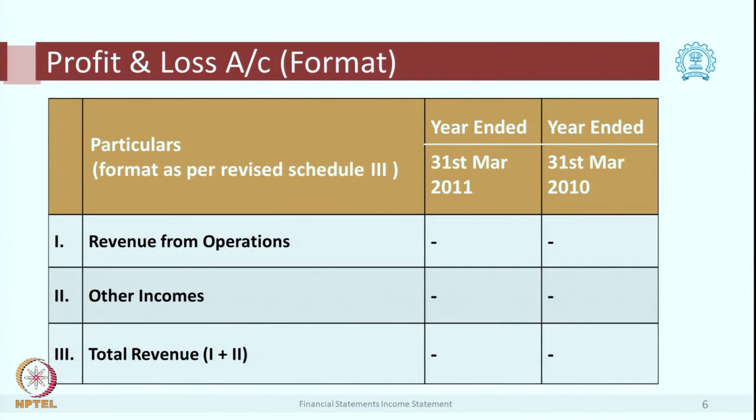Let us look at the Companies Act format as per Schedule 3. Instead of 'sales,' the term used is 'revenue from operations.' An entity might not only be selling goods — it can also be providing a variety of services. So the revenue generated from services plus from sales, both together, is called revenue from operations. Operations indicate this relates to the day-to-day functioning of the entity. Any income generated from the normal course of business would be shown as revenue from operations.